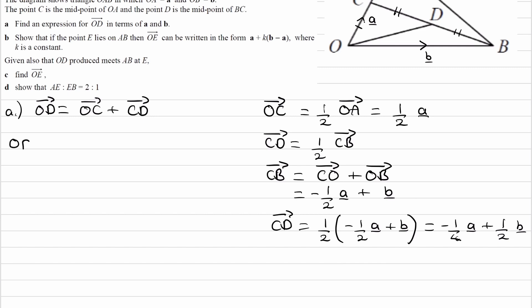So then OD is a half A, that's what OC was, and CD is minus a quarter A plus a half B. Simplify, we end up with a quarter A plus a half B.